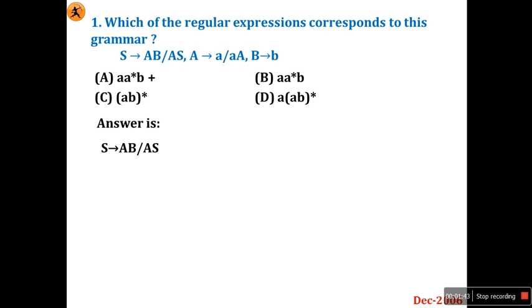Now go on. We will substitute A. In this expression, capital letters indicate non-terminals and small letters indicate terminals. Now in these two, let's look at all three productions. These are the three productions given. Now we will start from the starting symbol. S gives A, B. You may start S gives A, B or S gives A, S.